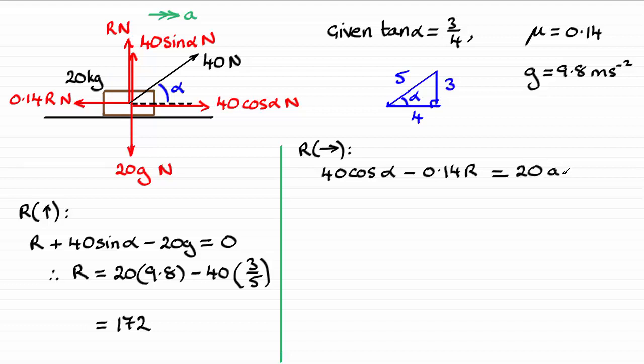So if we just substitute our values in now, 40 times the cosine of alpha—cosine of alpha adjacent over hypotenuse, that's going to be four fifths—and then we've got minus 0.14 times r. We've seen r is 172, and that's equal to 20a. I can actually divide both sides by 20, so I might as well put that all over 20, and that will just give me a. If you put this through your calculator, you should find that you get a equals 0.396. Don't forget those units, by the way—meters per second per second.